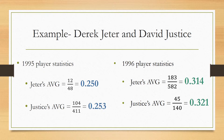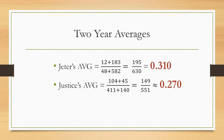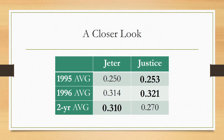But now let's look at the data combined for both years. These are the two-year averages for both players — look at the numbers in red. For 1995 and 1996 combined, Derek Jeter had an overall batting average of .310. So you can see that Derek Jeter had the better overall batting average, even though David Justice had the better batting average for both individual years.